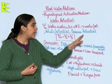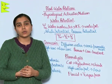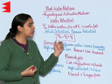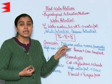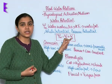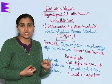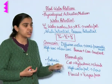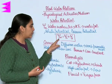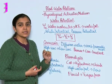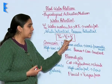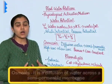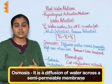Pressure potential: whenever water moves inside a cell, it becomes turgid and exhibits pressure across its cell wall and membrane. This is known as pressure potential. Water potential is the summation of solute potential and pressure potential, denoted by the equation ψw = ψs + ψp.